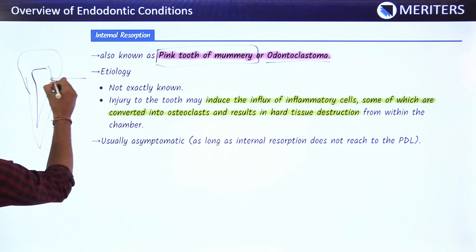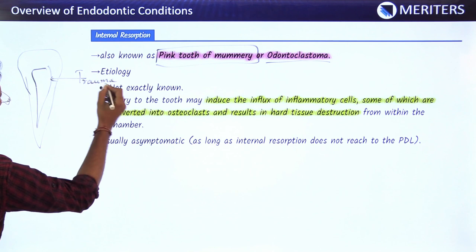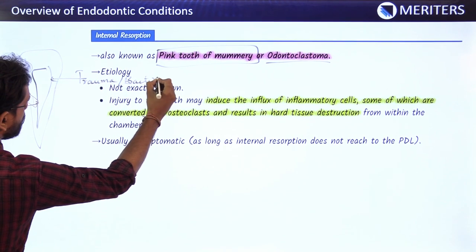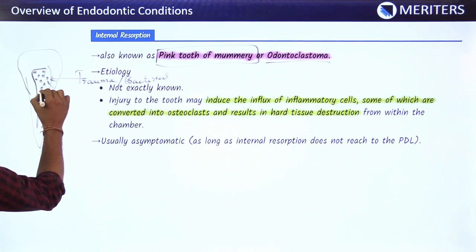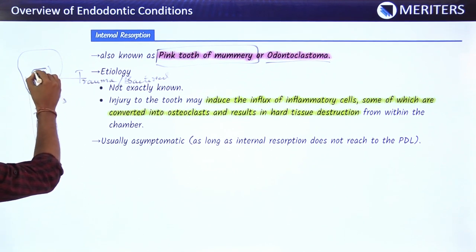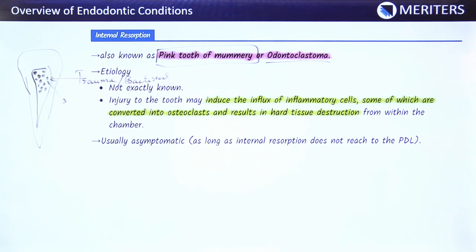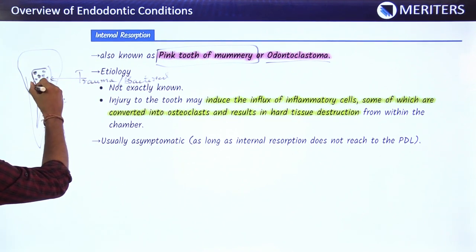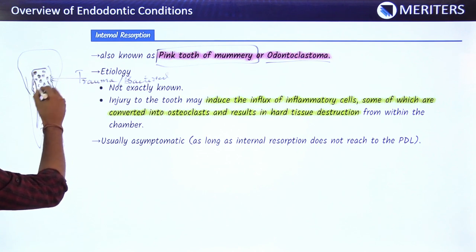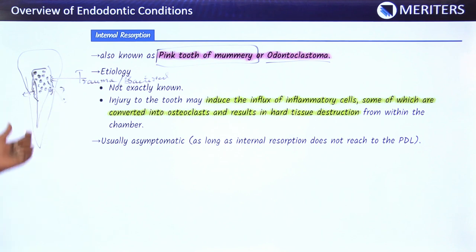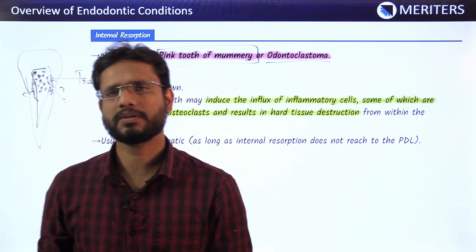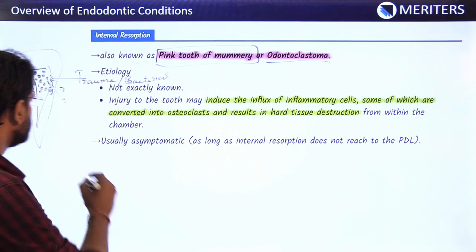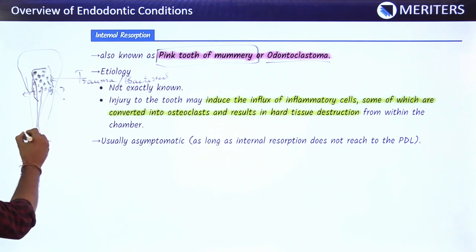Any trauma, bacterial infection, or other stimulus causes inflammation, producing inflammatory cells inside the pulp chamber. Since the wall is closed, these inflammatory cells are thought to evolve into osteoclasts, which start resorbing the tooth from inside, making the pulp chamber progressively larger until it comes out. This is internal resorption. It is usually asymptomatic but can become symptomatic if inflammation spreads to the periodontal ligament.